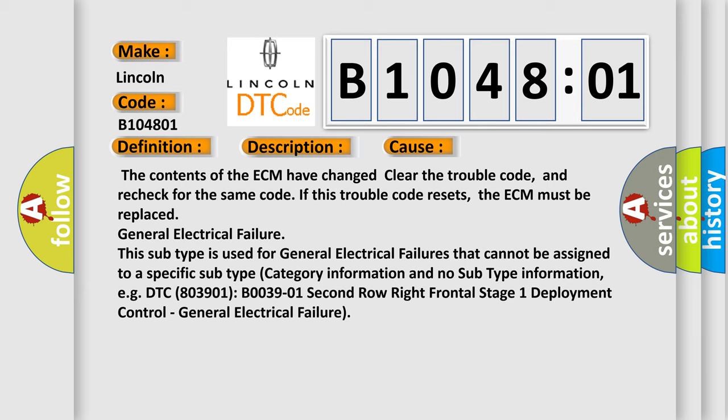General electrical failure. This subtype is used for general electrical failures that cannot be assigned to a specific subtype category information and no subtype information. For example, DTC 803901 B003901 2nd row right frontal stage 1 deployment control, general electrical failure.